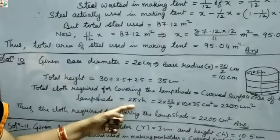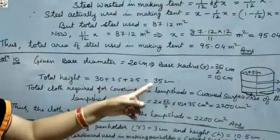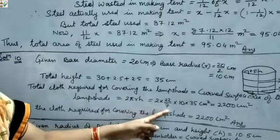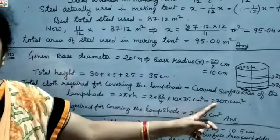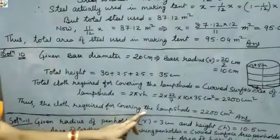Total cloth required = curved surface area of the cylinder = 2πRH = 2 × 22/7 × 10 × 35 = 2200 cm². Thus the cloth required for covering the lamp shade equals 2200 cm².